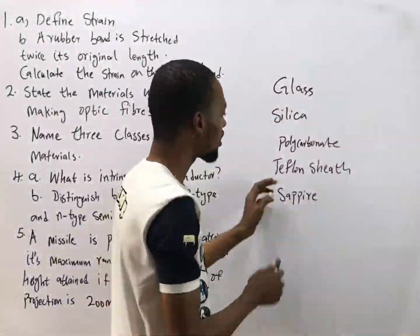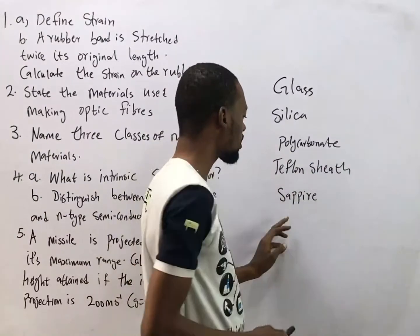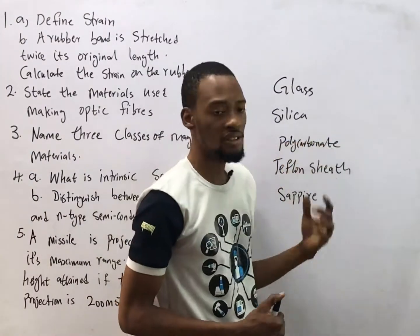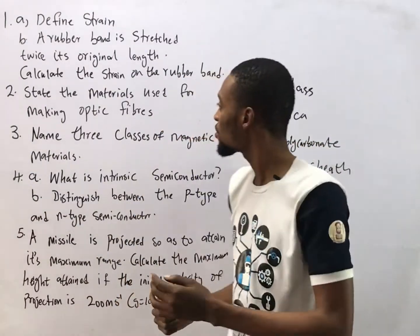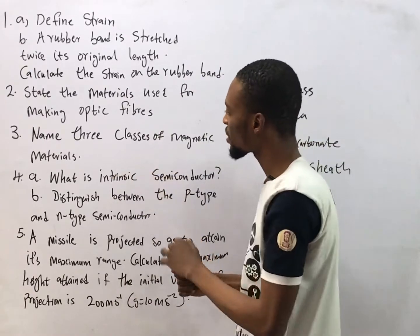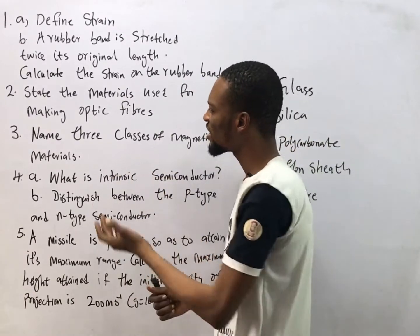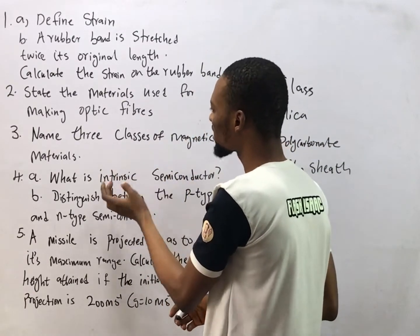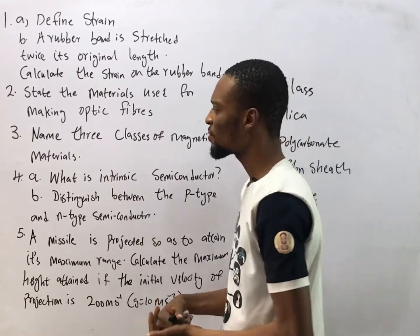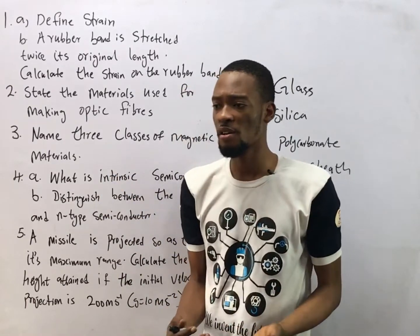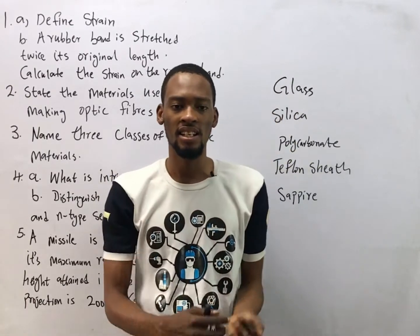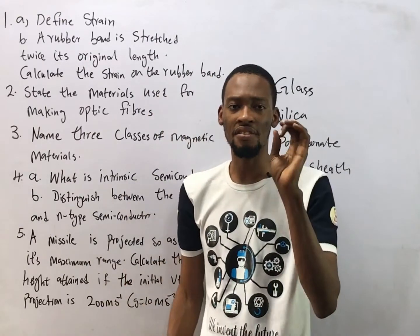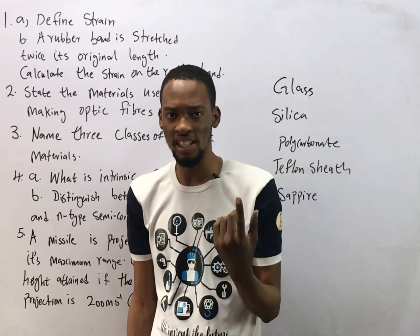Polycarbonates, Teflon sheets, and sapphire are materials used for optic fibers. The three classes of magnetic materials are: paramagnetic materials, diamagnetic materials, and ferromagnetic materials.